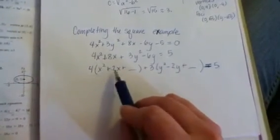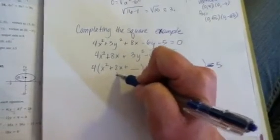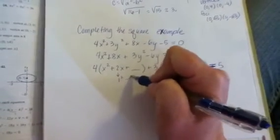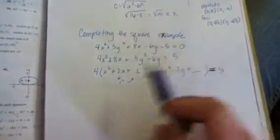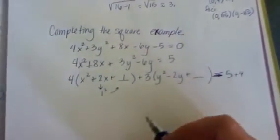So now, half of 2 is 1, and 1 squared is 1, so I'm adding 1. But instead of adding 1 over here, I'm actually adding a value of 4 times 1. So I'm really actually adding a value of 4 to the left side of the problem, so I also have to add 4 to the right side of the problem.